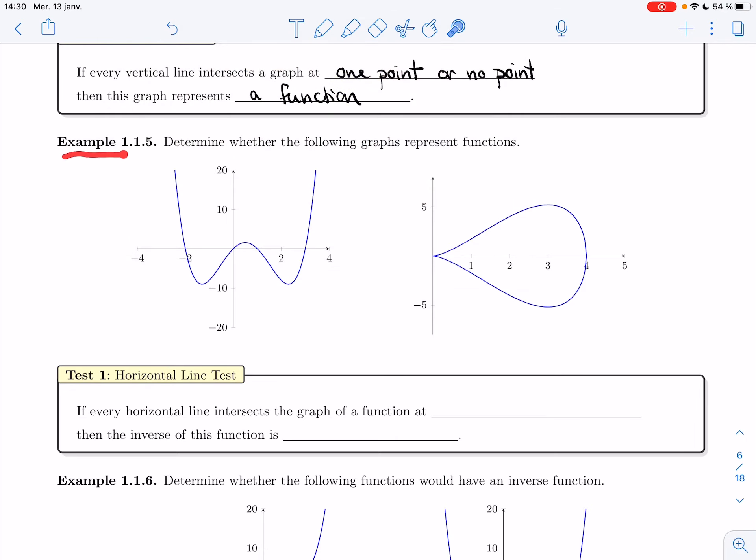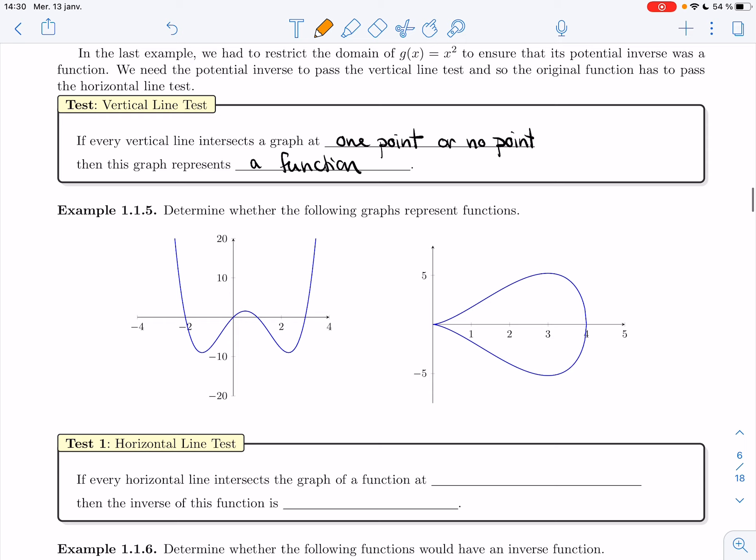In this example, we're asked to determine whether the following graphs represent functions. We're going to use the vertical line test. So here, if I start drawing my vertical lines, every single one of them needs to intersect in one or no points. And so it passes the vertical line in one point. And so yes, it is a function.